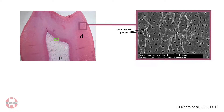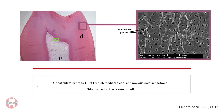Odontoblasts have a process that goes deep into the dentine and act as sensor cells. They express what we call transient receptor potential (TRP) channels, which act as pain sensors. With these receptors, odontoblasts sense noxious cold, noxious heat, mechanical stimulation, and chemical stimulation — for example, to toxic compounds.